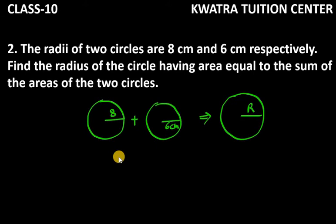So we have to make a new circle with radius R. We have two given circles - this is area one (A₁), this is area two (A₂), and the bigger new circle is area A.